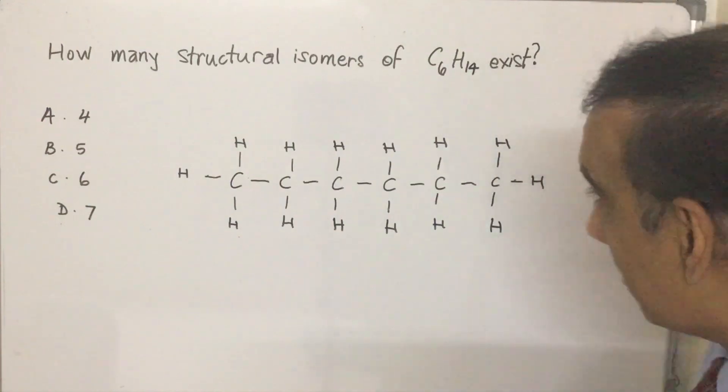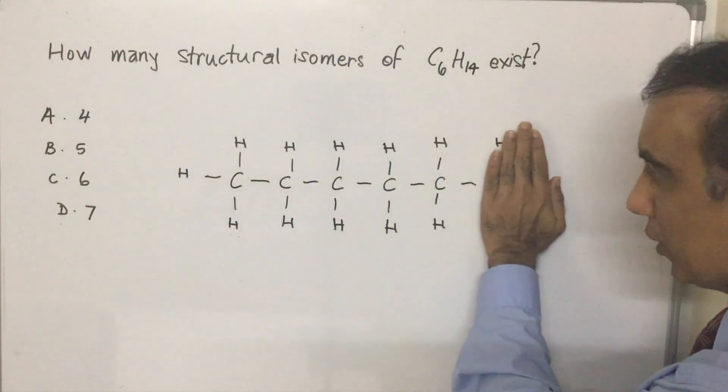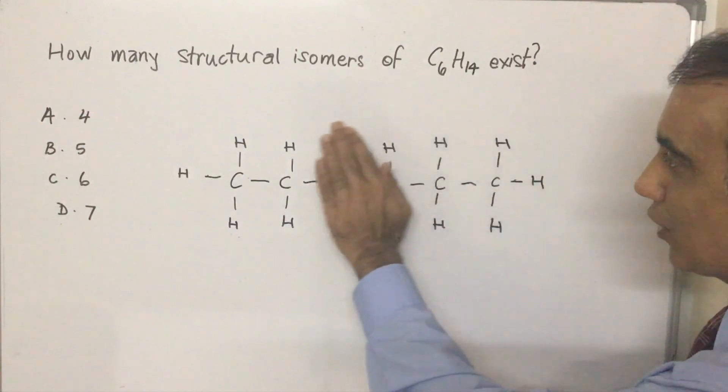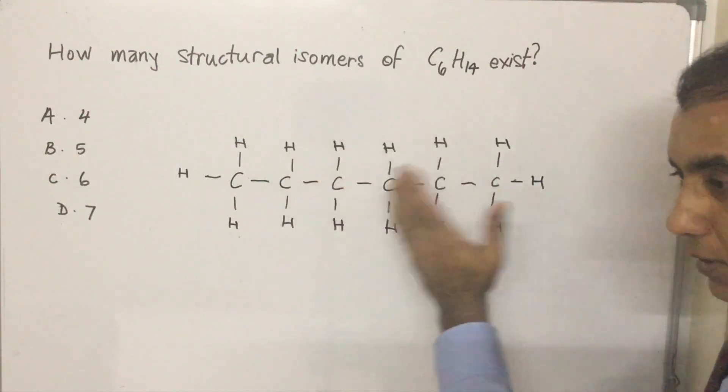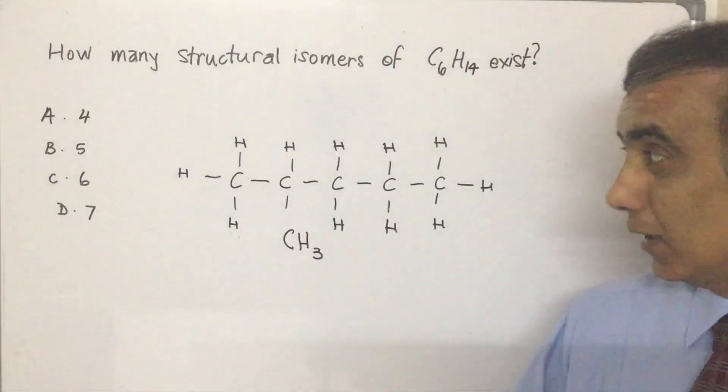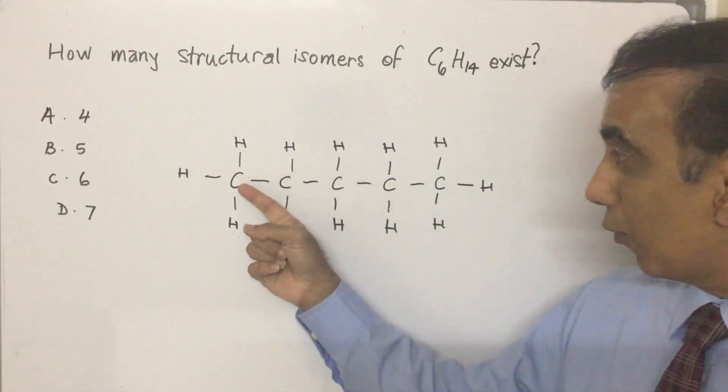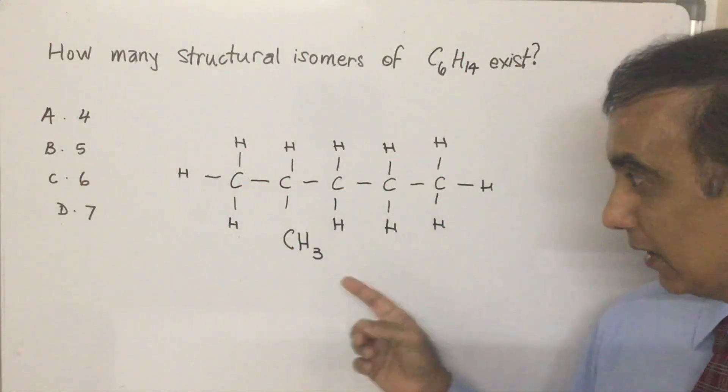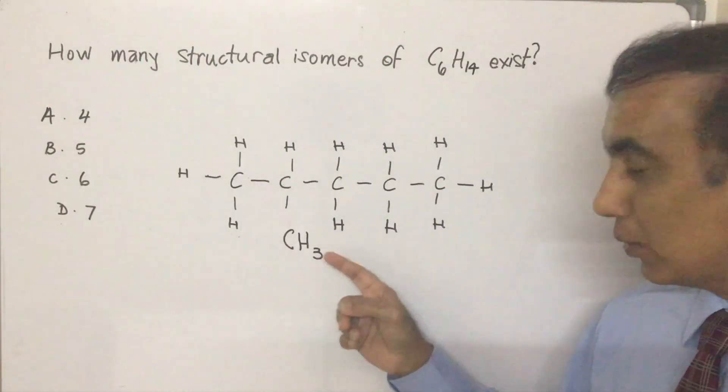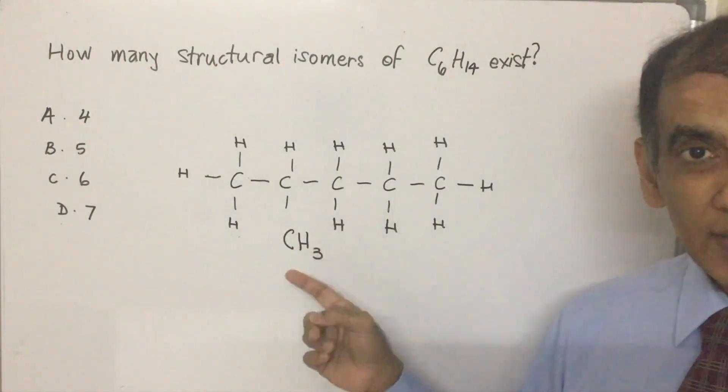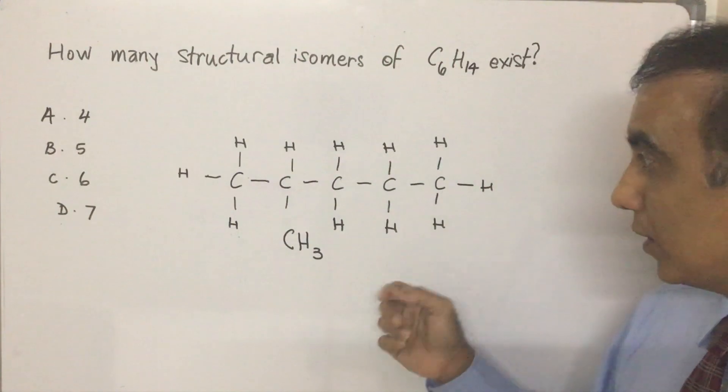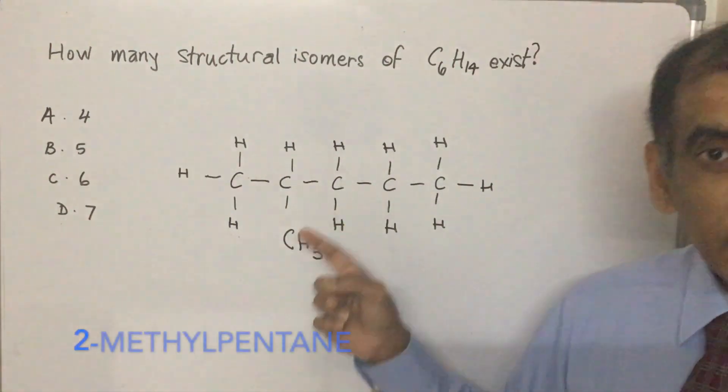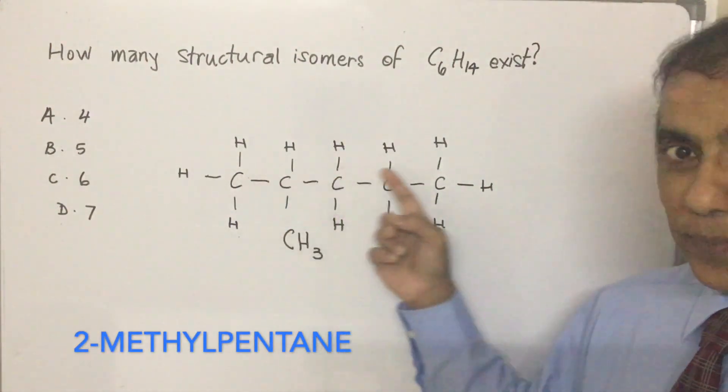Another structure could come by removing this CH3 from here and attaching it to one of the carbons. So let's do that. And that would give you this structure where you have 1, 2, 3, 4, 5 carbons in a straight chain. And on carbon 2, you've got a CH3 group. That gives you 2-methylpentane.